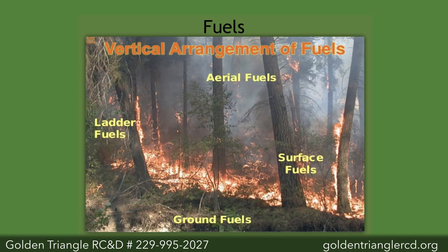Now we're going to move into fuels. The vertical arrangement of fuels: at the lowest level we have ground fuels, which would be organic matter such as peat right above the mineral soil. Then on the surface itself, above the ground, are surface fuels like pine straw or leaves. You have ladder fuels, staggered throughout the mid-story and understory depending on how high the vegetation is growing. And then aerial fuels, which you really want to avoid — you do not want a canopy fire.